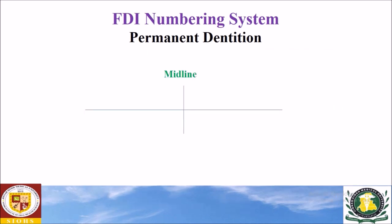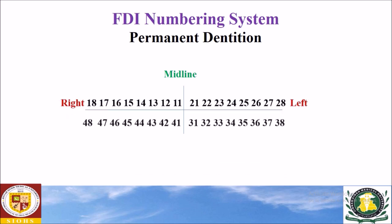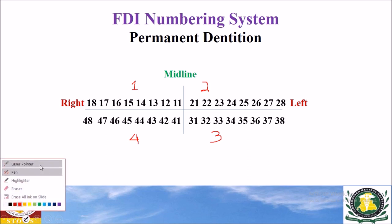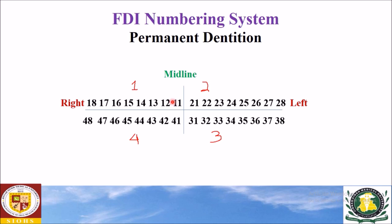Now we will discuss the FDI numbering system for the permanent dentition. Like the deciduous dentition, there are two digits. The first digit indicates the quadrant number: one is the maxillary right quadrant, two is the maxillary left quadrant, three is the mandibular left quadrant, and four is the mandibular right quadrant. The second digit indicates the tooth number: one through eight, and this is the same for all arches.